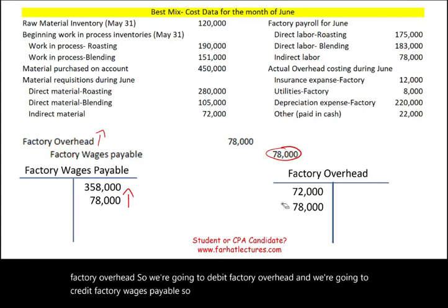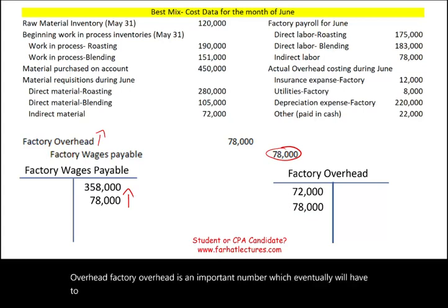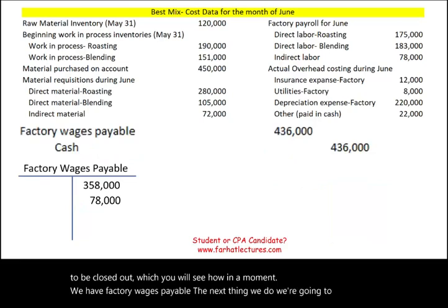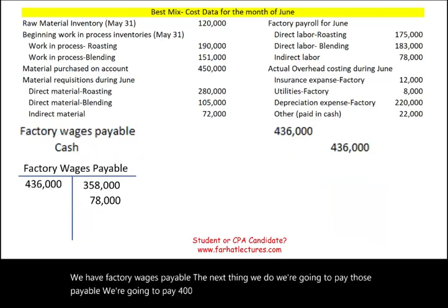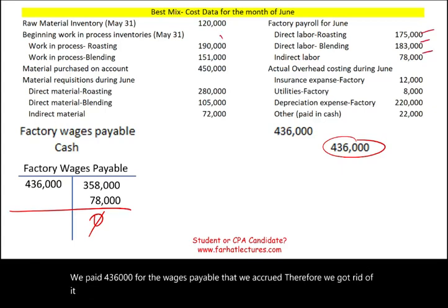Factory overhead is an important running total that will eventually need to be closed out. We also have factory wages payable on the books, and the next step is to pay those wages. We pay $436,000, which closes out the factory wages payable account — debiting wages payable and crediting cash.